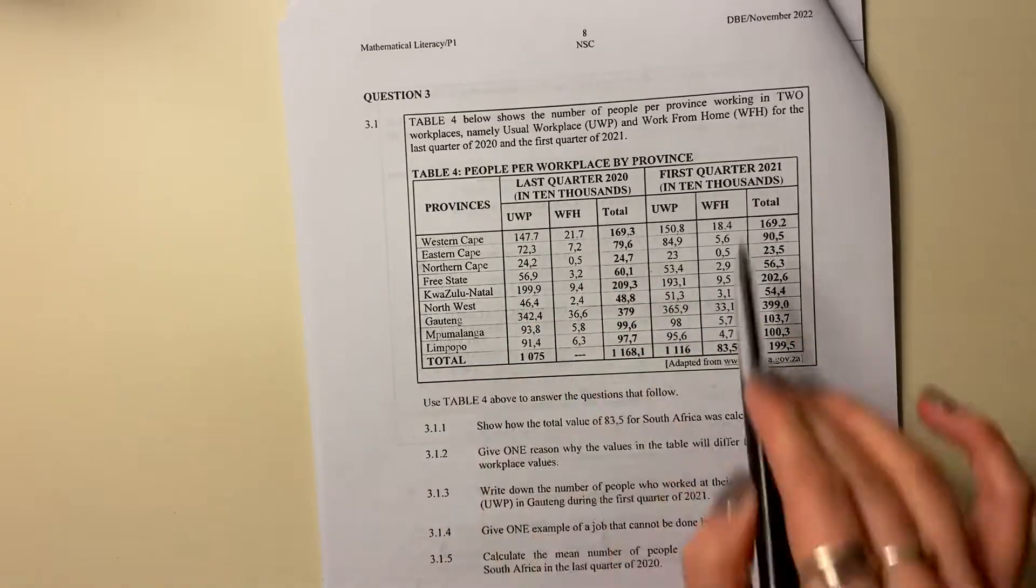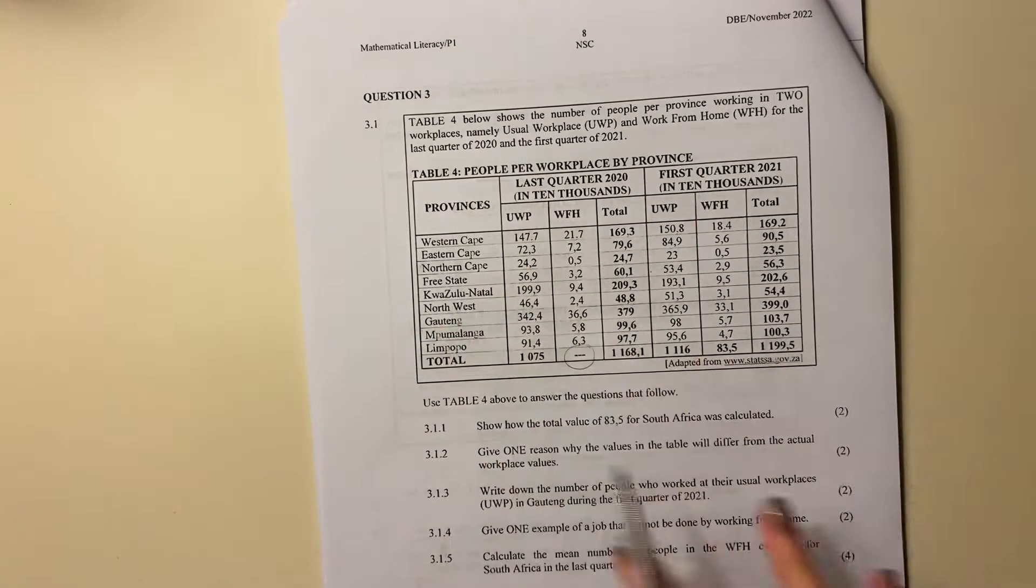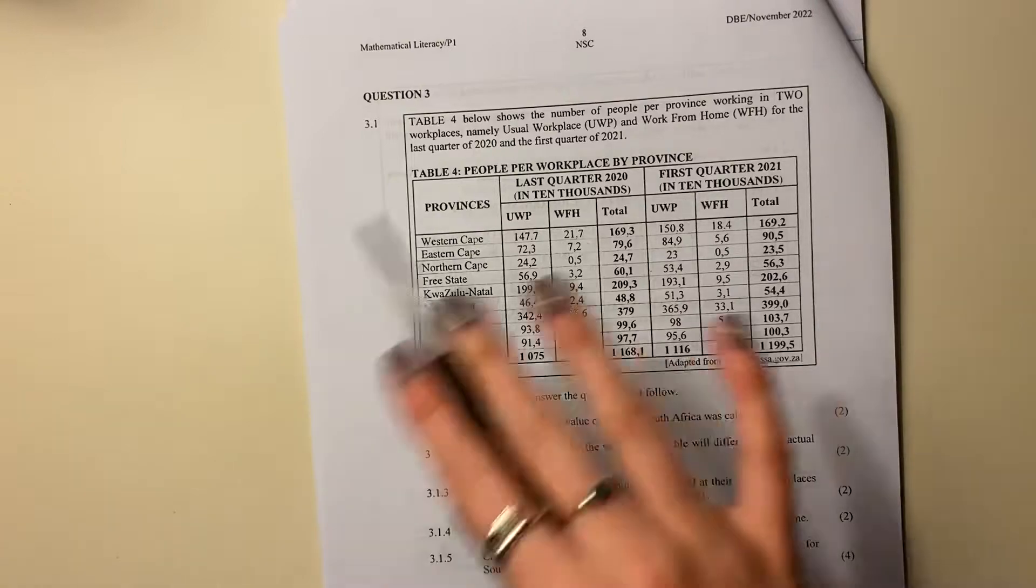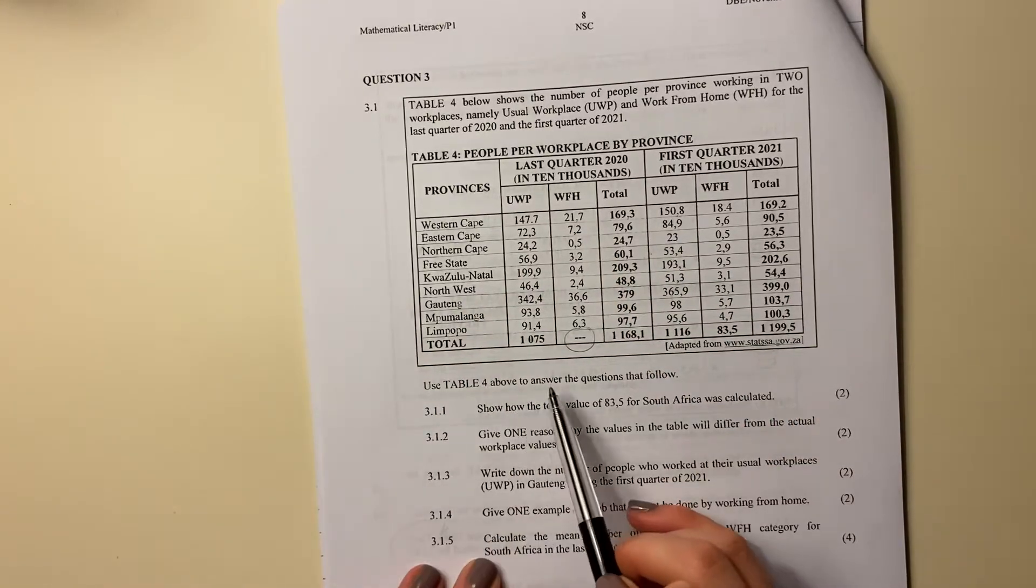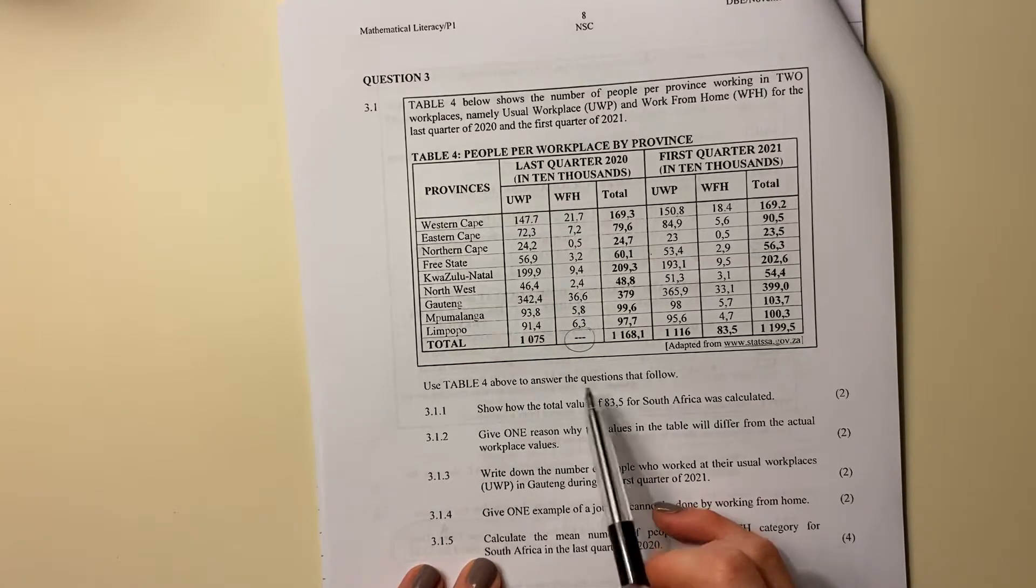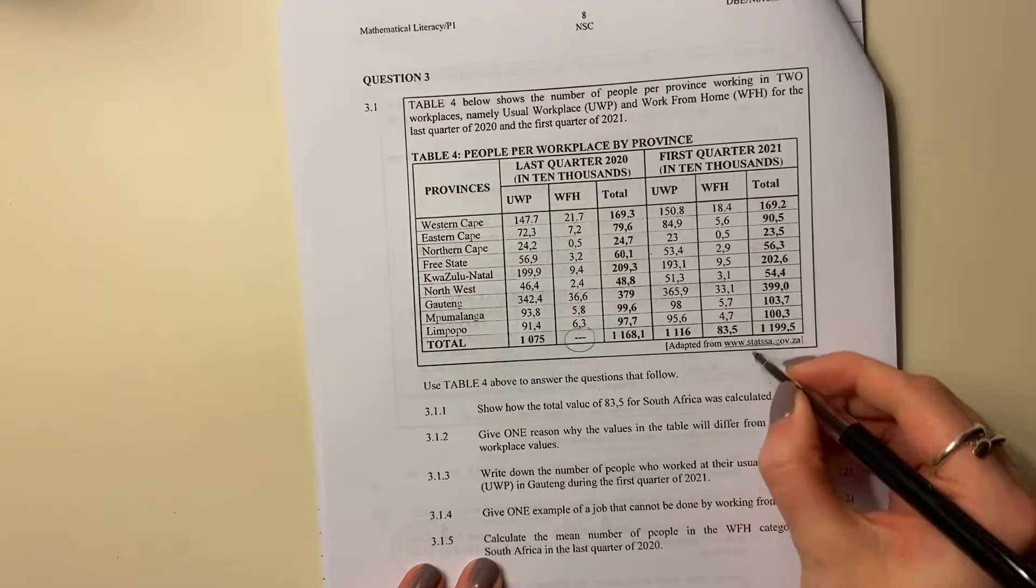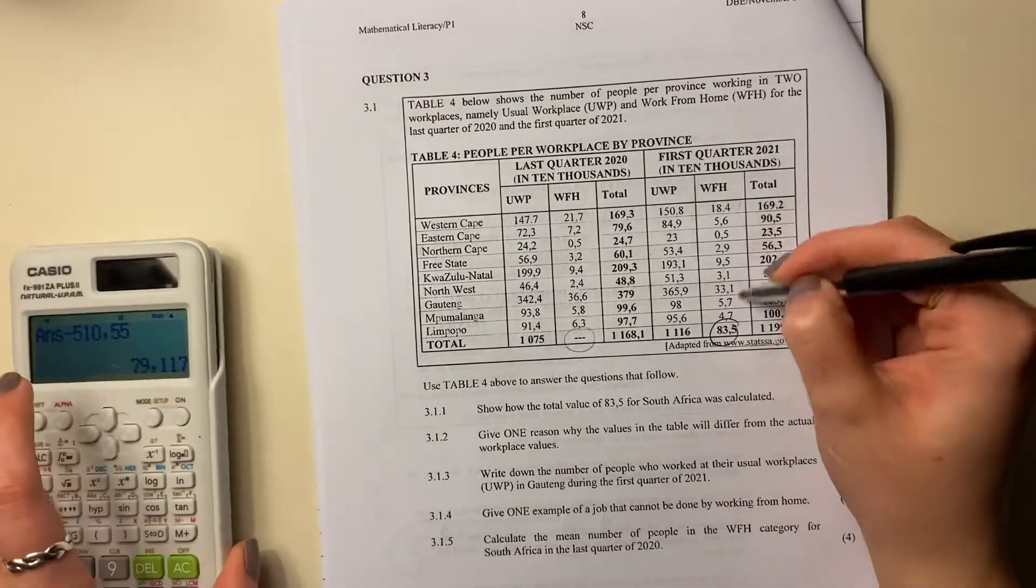So here it says we can look at the table as we sort of go. We can see there's a missing value here, we're probably gonna have to calculate that. Other than that, we kind of can read this. There's my different provinces, we know there's nine provinces, and we can go from there. Use table four above to answer the questions that follow. Show how the total value of 83.5 for South Africa was calculated.